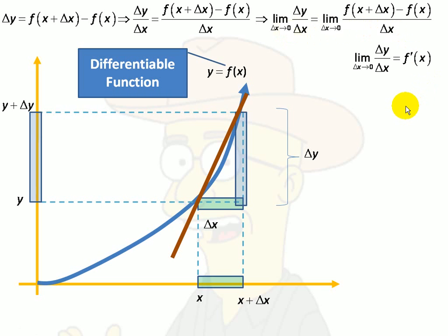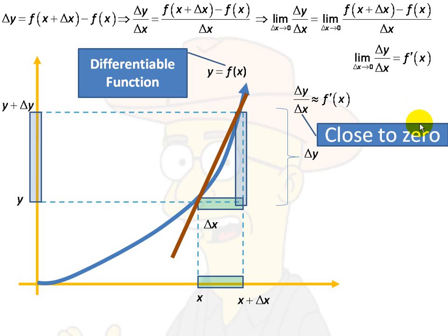So we have this. We have that as delta x goes to zero, delta y over delta x is the derivative. Okay. Now, that being the case,